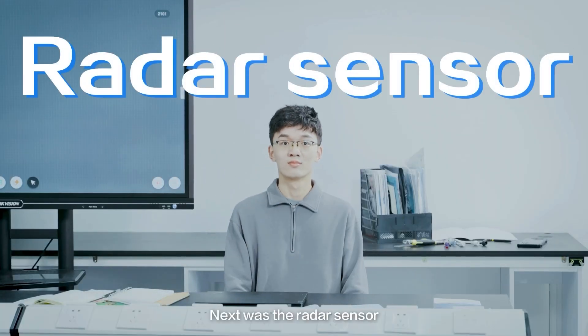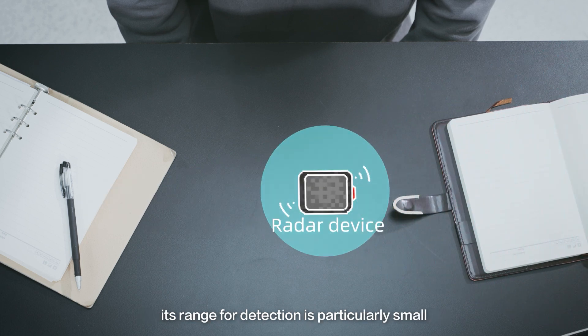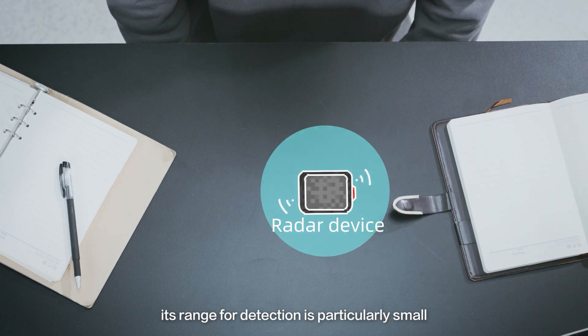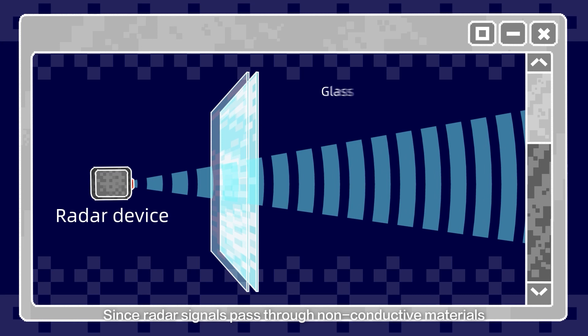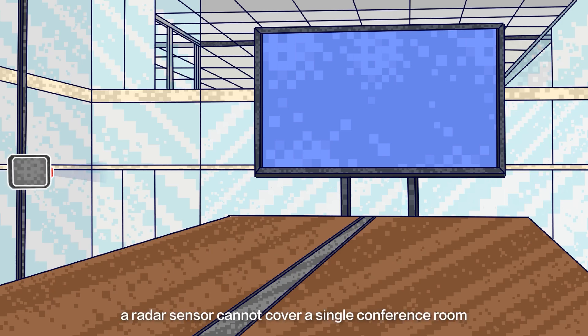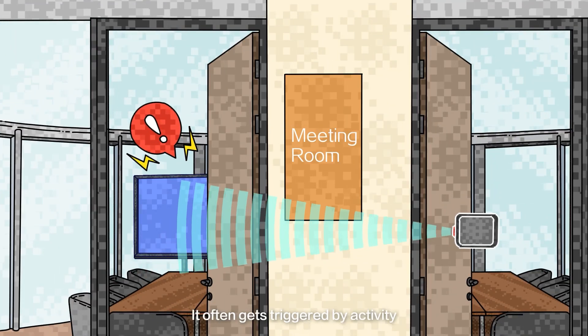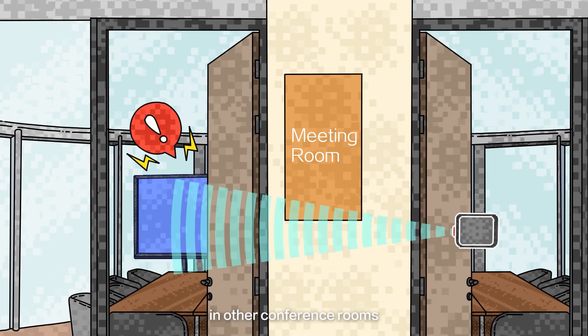Next was the radar sensor. Though radar features long-distance perception, its range for detection is particularly small. Since radar signals pass through non-conductive materials such as glass and wood, a radar sensor cannot cover a single conference room with any precision. It often gets triggered by activity in other conference rooms.